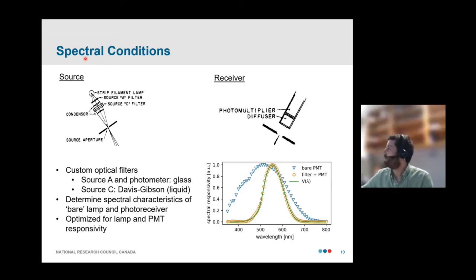The spectral conditions. So, what I mean by that is that we try to match our source spectral power distribution to CIE Illuminant C, and we try to match the spectral responsivity of our photometer to the V-Lambda function. So, we do that using several custom optical filters. In the source arm, we have a pair of filters, a glass filter, which actually acts to convert the emission from our lamp into something resembling source A. And then we have an additional Davis-Gibson liquid filter that's used to convert that into source C. This is a kind of classical optical device, the Davis-Gibson filter. It's actually a liquid filter. So, it consists of a pair of cuvettes, and you fill each cuvette with a suitable solution. And if you do this correctly, you'll get the correct transmittance spectrum that you're after.